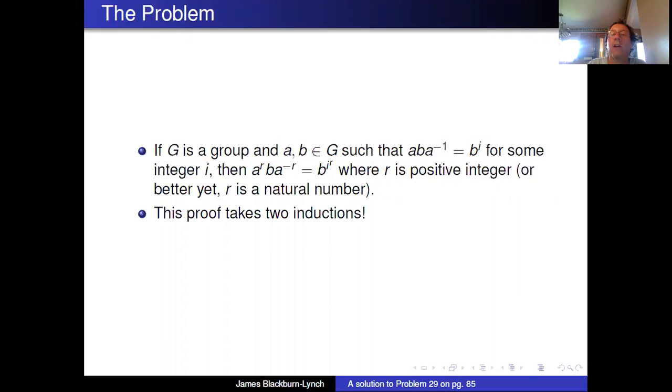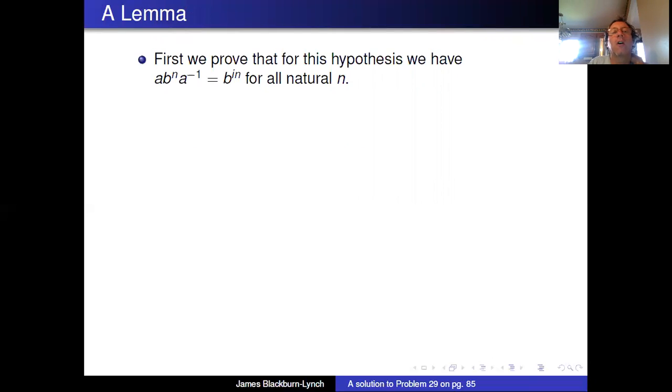Before we do this one though, it's gonna take two inductions because we need a little lemma first. So here's our lemma. First we prove that for this hypothesis we have ab^n a^(-1) = b^(in) for all natural n.